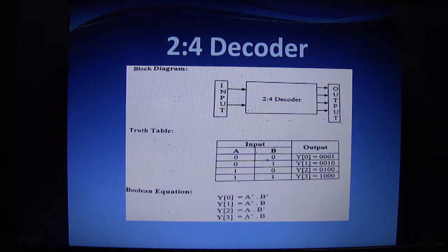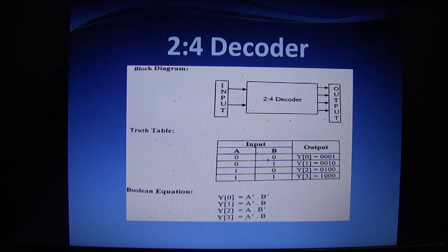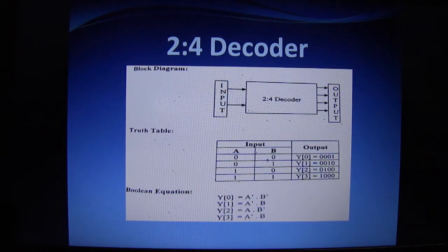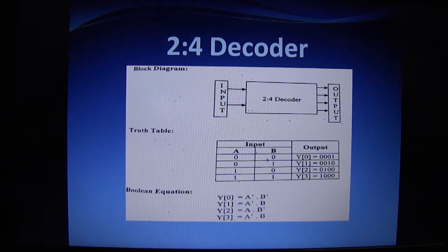So first of all, it is necessary to see what is a 2-4 decoder. A 2-4 decoder contains 2 inputs and 4 outputs.